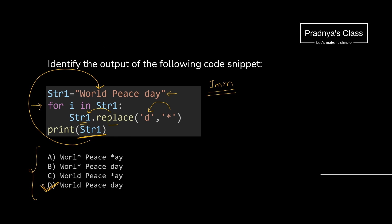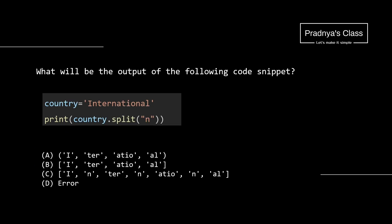If you focused on the explanation of split, you will know the answer. When we mention a delimiter, the string gets split based on that delimiter. Let's check where we find 'n' in the string — there are three occurrences of 'n', so we get a total of 4 words in the form of a list. Looking at the output, B is the correct option — we have 4 elements in list form.